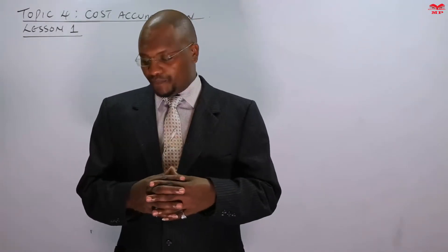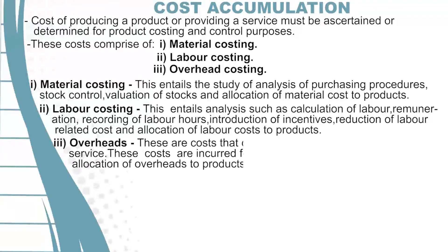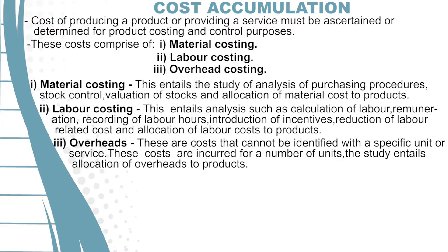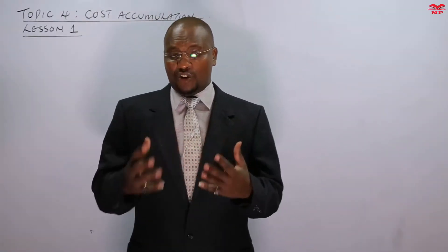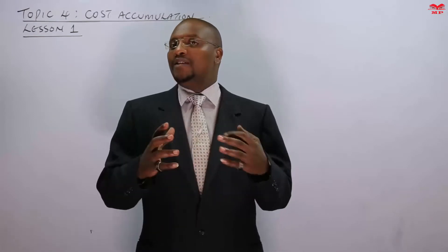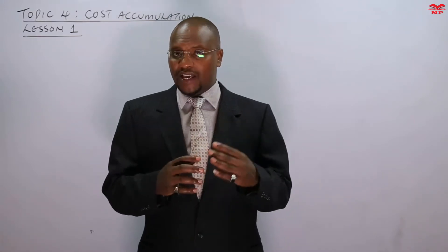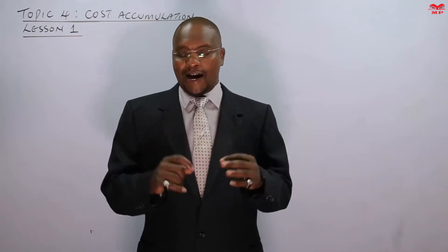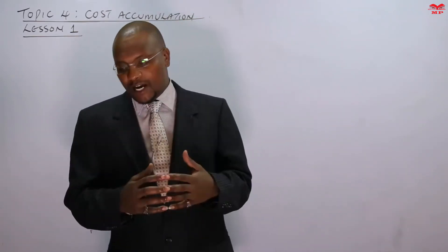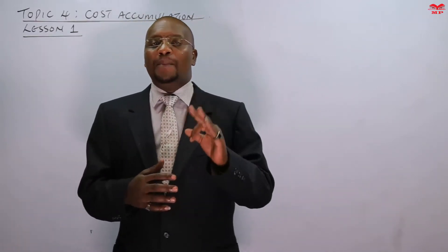Finally, we have the overheads. These costs cannot be identified with a specific unit or service; they are incurred for a number of units. The study entails allocation of overheads to products. As we covered previously, overheads are indirect costs which may not be identified with a specific product or service. So we are going to look at how we can allocate these overheads, even though they are indirect costs, to the products. Those are just a brief analysis of these three elements of cost: material cost, labor cost, and overheads.